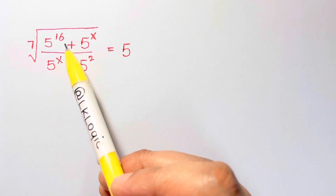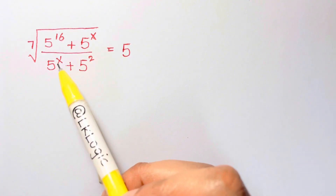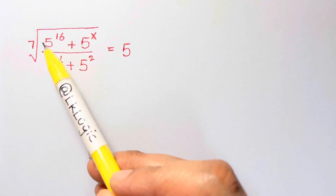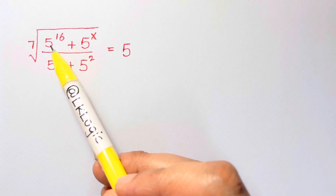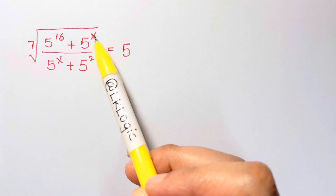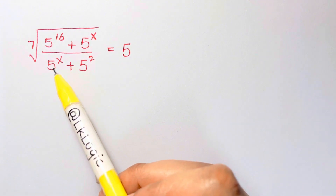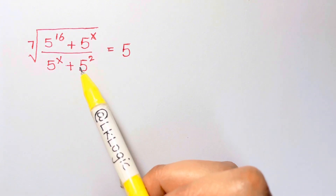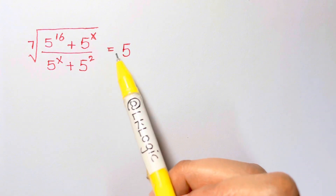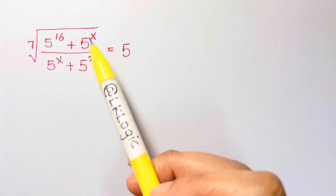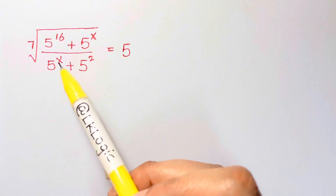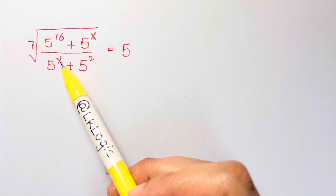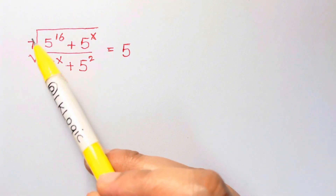Hi guys, we have a nice exponential problem. Under the 7th root we have 5 to the 16 plus 5 to the x, over 5 to the x plus 5 squared, equals 5. As you can see, you have the variable x here.